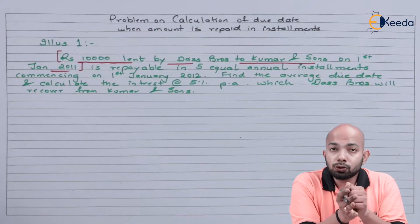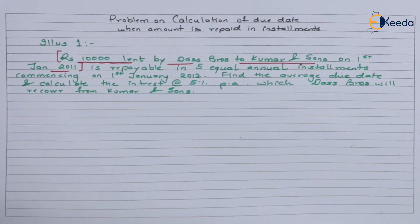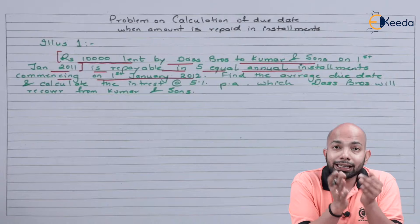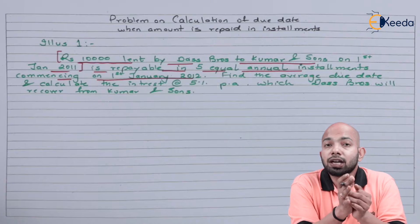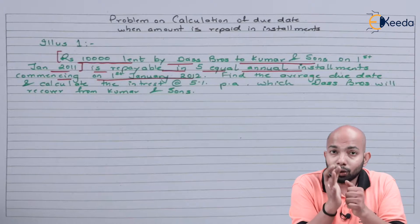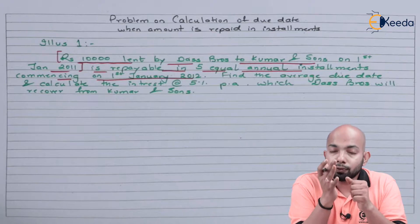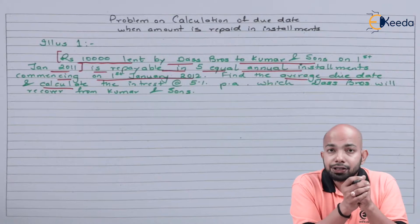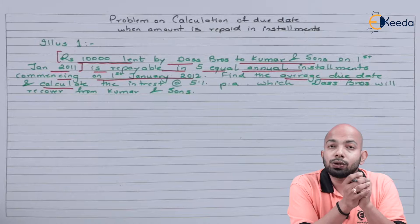Das Brothers lent out 10,000 rupees to Kumar and Sons on 1st January 2011. It is repayable in five equated annual installments commencing from 1st January 2012. The loan was sanctioned on 1st January 2011, however the EMI starts from 1st January 2012. We have to find the average due date first, and then calculate the interest which Das Brothers will recover from Kumar and Sons at the rate of 5% per annum.